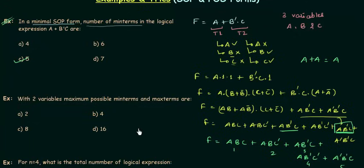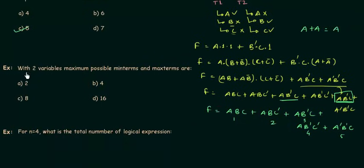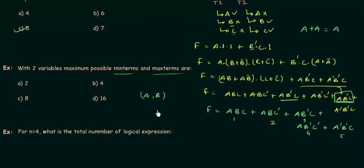We've solved example one and now move to example two: with two variables, what are the maximum possible min terms and max terms? We have two variables, let's say A and B, and we need to find the maximum number of min terms and max terms.